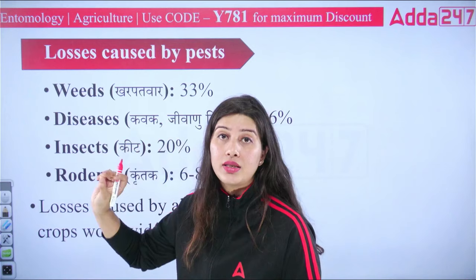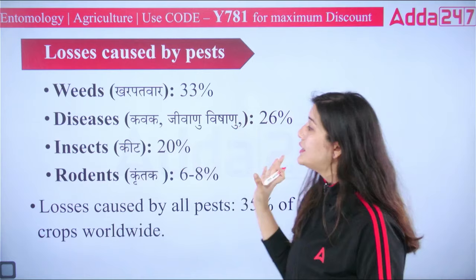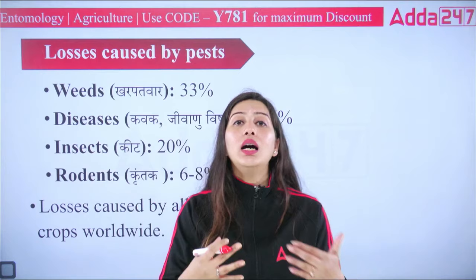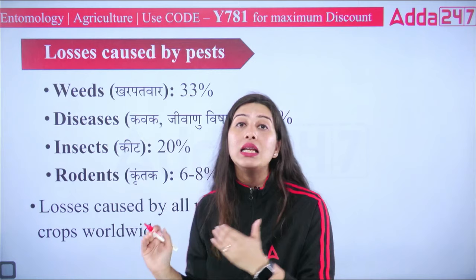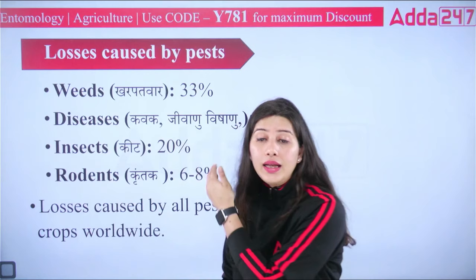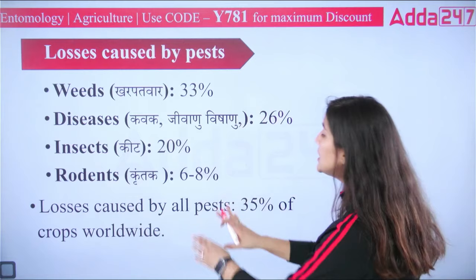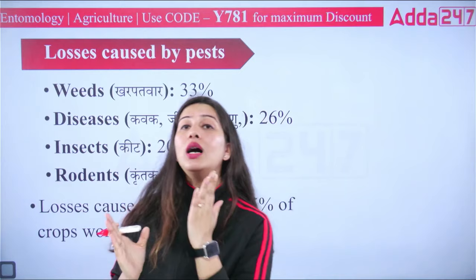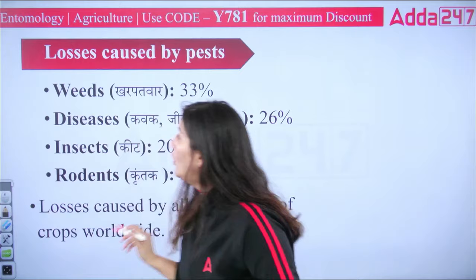If we look at crop losses: weeds cause approximately 26% loss, diseases cause around 26% loss — these are approximate figures and data keeps changing every year, so check the latest data. Insects cause around 20% loss, rodents in fields cause 6 to 8% loss. Overall, looking at all pests worldwide, about 35% of crop production is lost to pests.